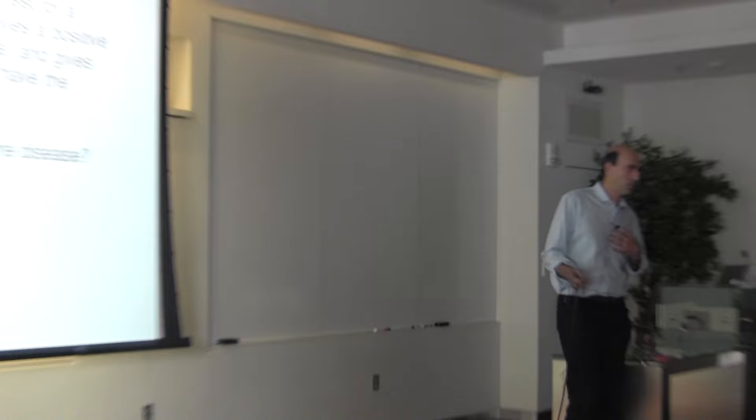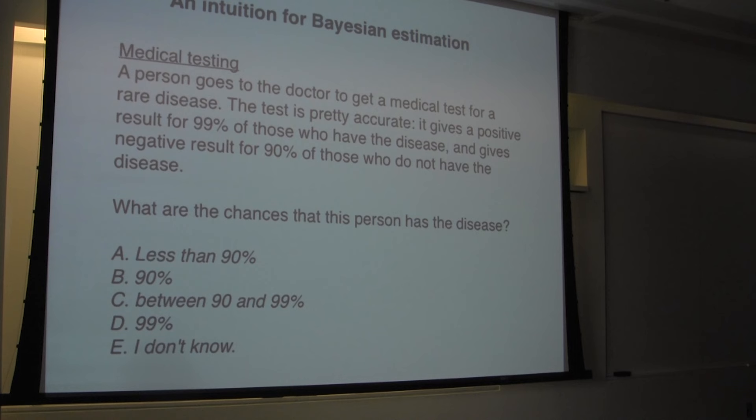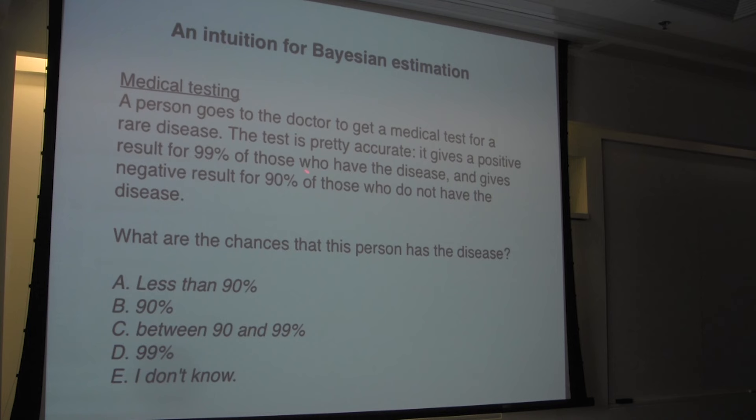So here's the simplest version of the problem — something that, now in the media, you've probably read about in stories about mammograms and medical tests. This is just a very simple, intuitive sense of why Bayesian integration matters. A person goes to a doctor for a medical test for a rare disease. The test is pretty accurate: it gives a positive result for 90% of those who have the disease, and negative for 90% of those who do not have the disease.